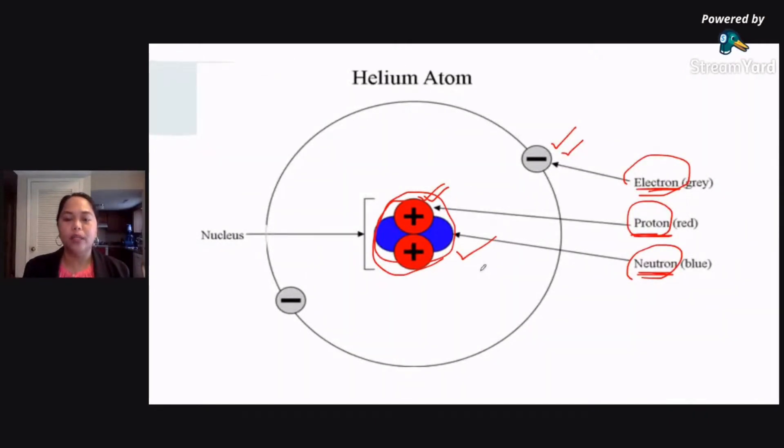So, electrons are not found in the nucleus sa gitna ng ating atom. Now, there is also a difference in terms of their mass. Yung proton nyo po at yung neutron, halos magkapareho yung mass. Although, pag tinignan, yung pinaka mabigat sa kanila would be the neutrons.